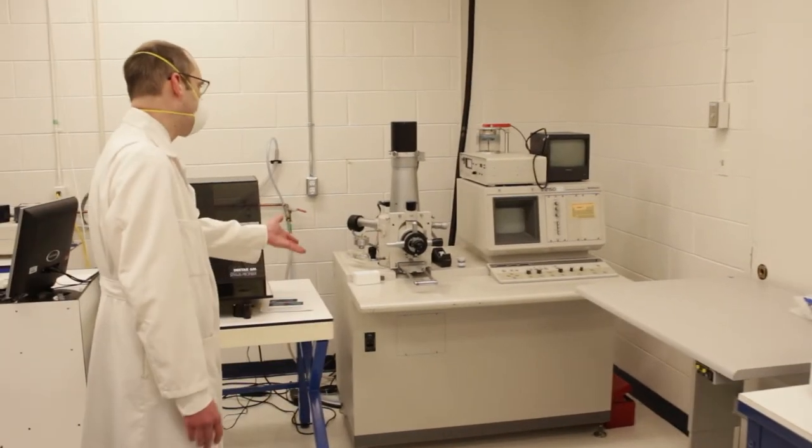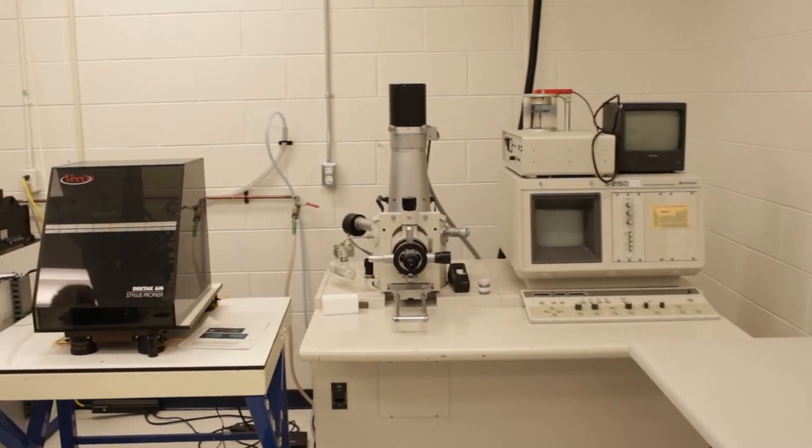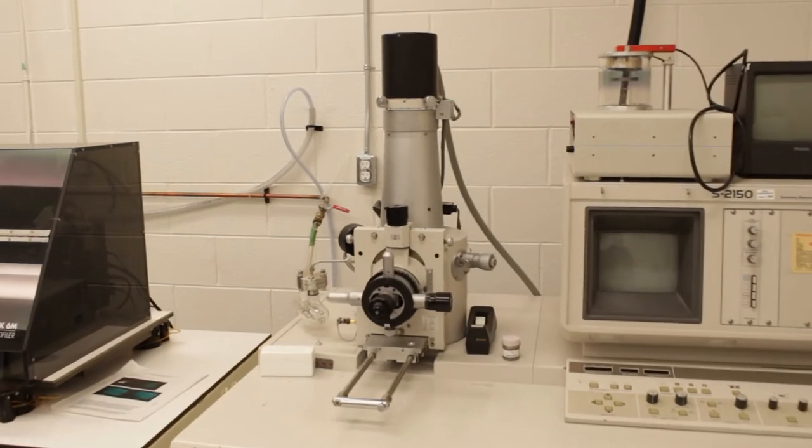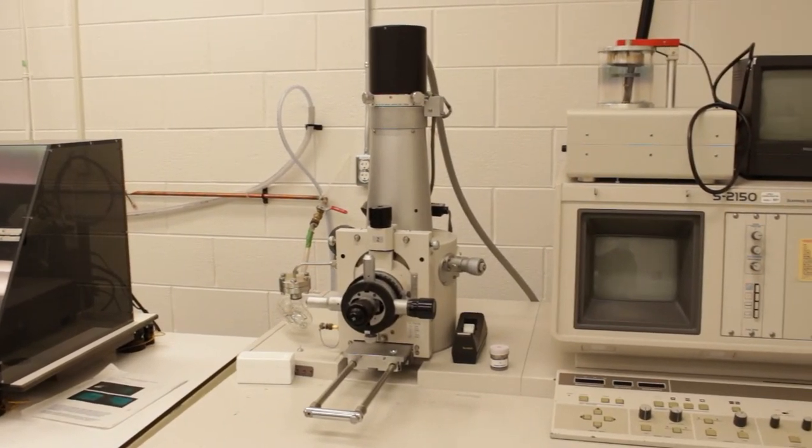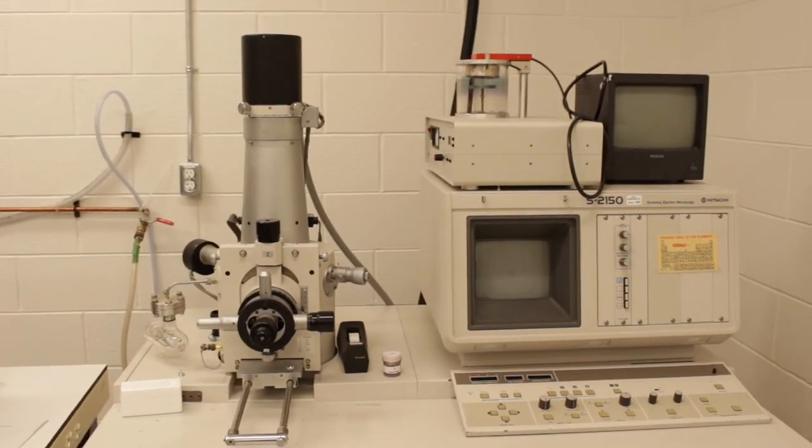This over here is our scanning electron microscope so when we're coating things like optics and lenses we need to look at the surface quality of our devices that we're manufacturing and so we can use the scanning electron microscope to do that.